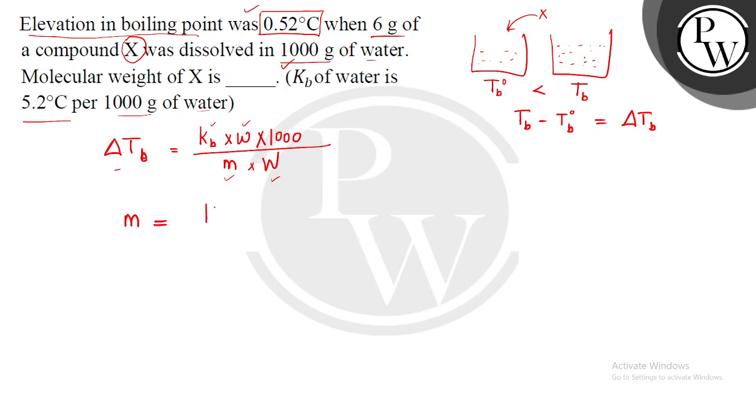So m equals Kb into W into 1000 upon delta Tb into capital W. Now let's put values. Kb value, that is 5.2 degree Celsius per thousand gram of water.